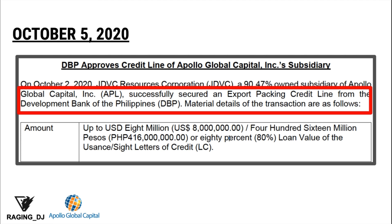On October 5, 2020, the DBP approved the credit line of APL Incorporated's subsidiary. They obtained a credit line from the Development Bank of the Philippines of approximately 8 million US dollars.